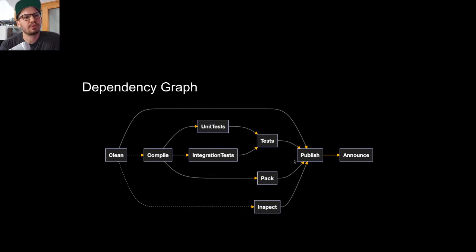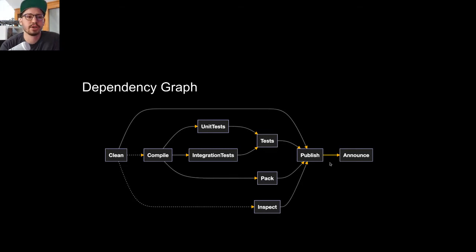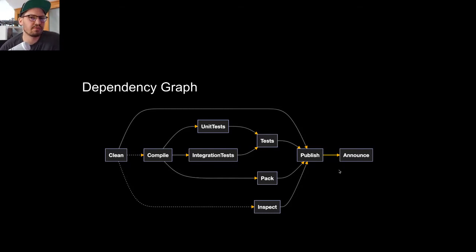'Publish' eventually depends on compile and also on clean, so if you execute publish, clean will run first. 'Inspect' for code inspection is also there. You can also see a yellow arrow representing a trigger — for example, if you have an 'announce' target that posts a message on Twitter, you don't want to invoke announce directly; you invoke 'publish' which in turn triggers 'announce.'